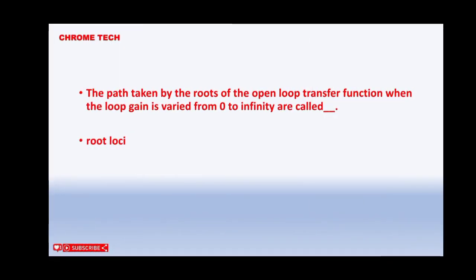The path taken by the roots of the open loop transfer function when the loop gain is varied from 0 to infinity are called. Root locus is the correct answer.